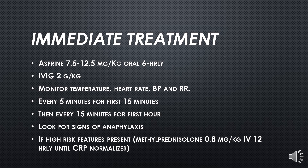Look for signs of anaphylaxis when starting the drug. If high risk features are present, give methylprednisolone 0.8 mg/kg intravenously 12-hourly until C-reactive protein normalizes. You will know treatment is effective when symptoms improve clinically and inflammatory markers such as CRP and ESR decrease. For high risk features, treatment is methylprednisolone; otherwise, aspirin and intravenous immunoglobulin.